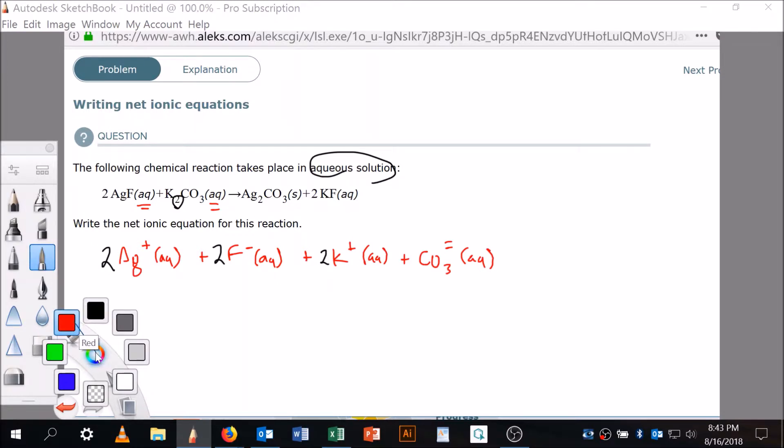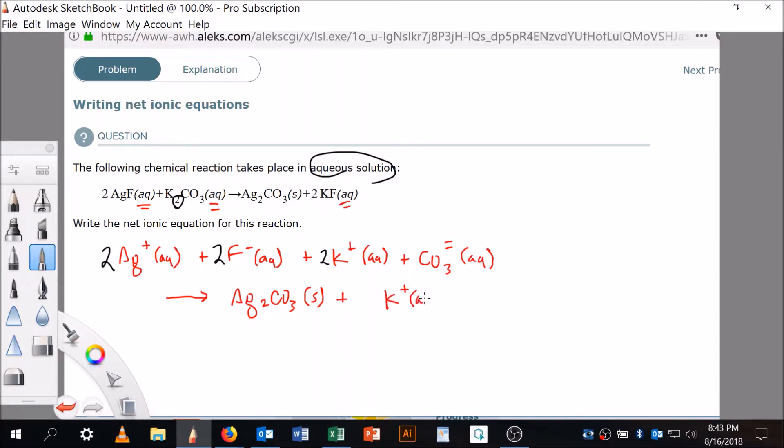Now, let's go back to reds. This is solid. So solid means that the silvers and the carbonates are stuck together. And we have potassiums because it's aqueous, plus fluorides because those are aqueous or all by themselves. And it looks like there's two of them. So there's going to be two here and two here.